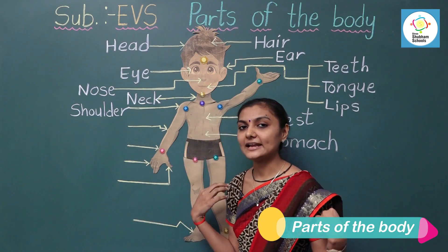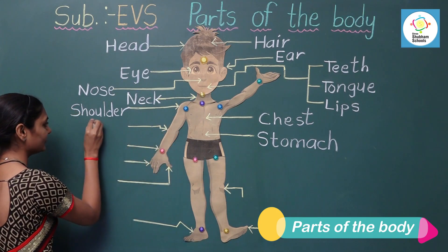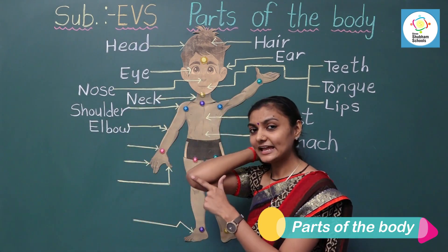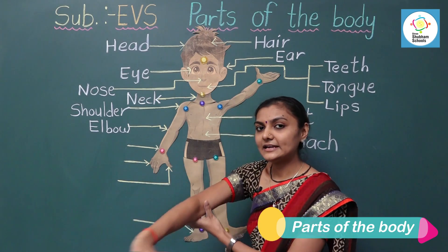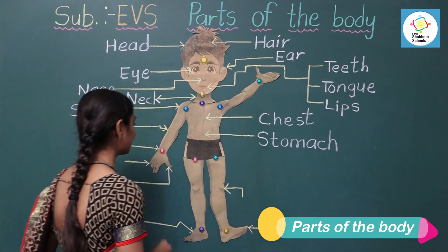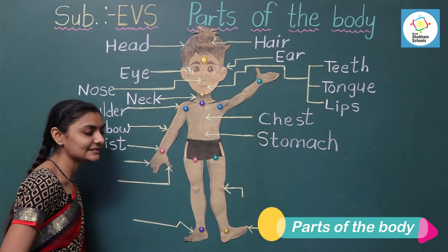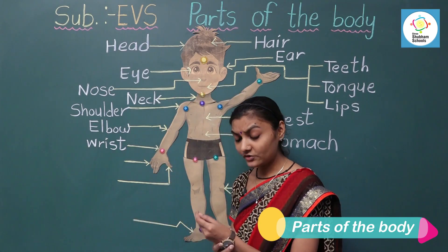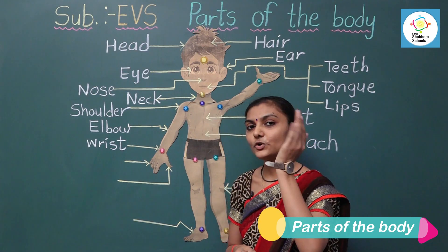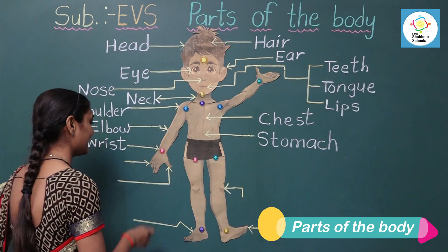The next one is wrist — W-R-I-S-T. On the wrist, we wear a watch. We can move our palm with the help of the wrist. The next one is finger — F-I-N-G-E-R. Our palm includes fingers and thumb.